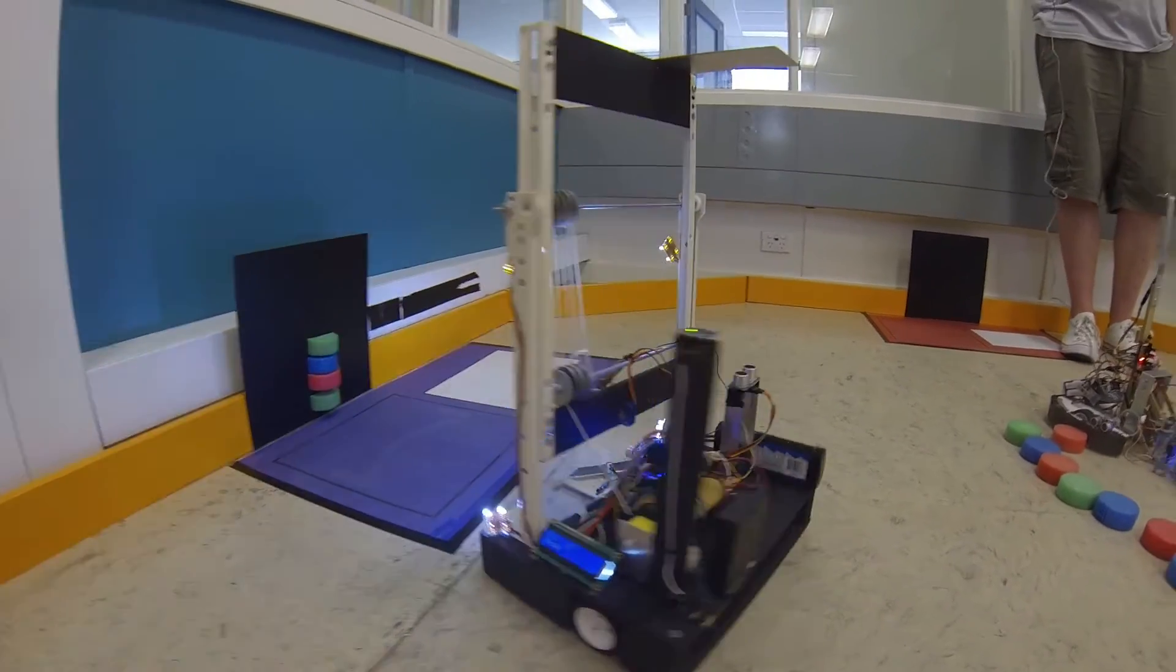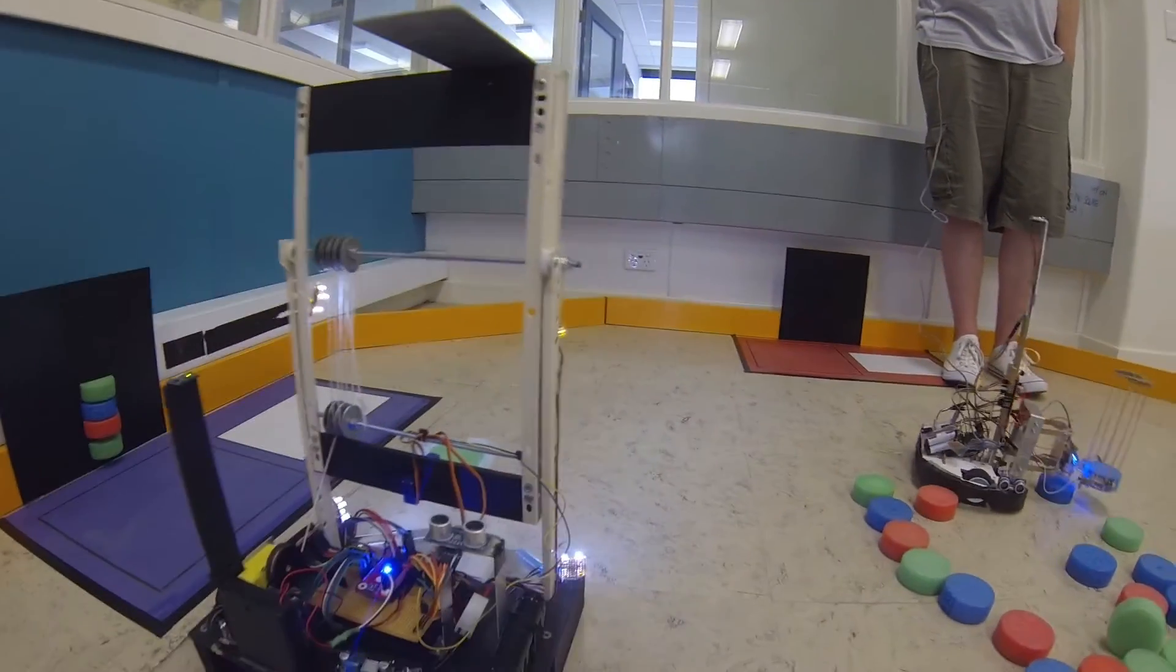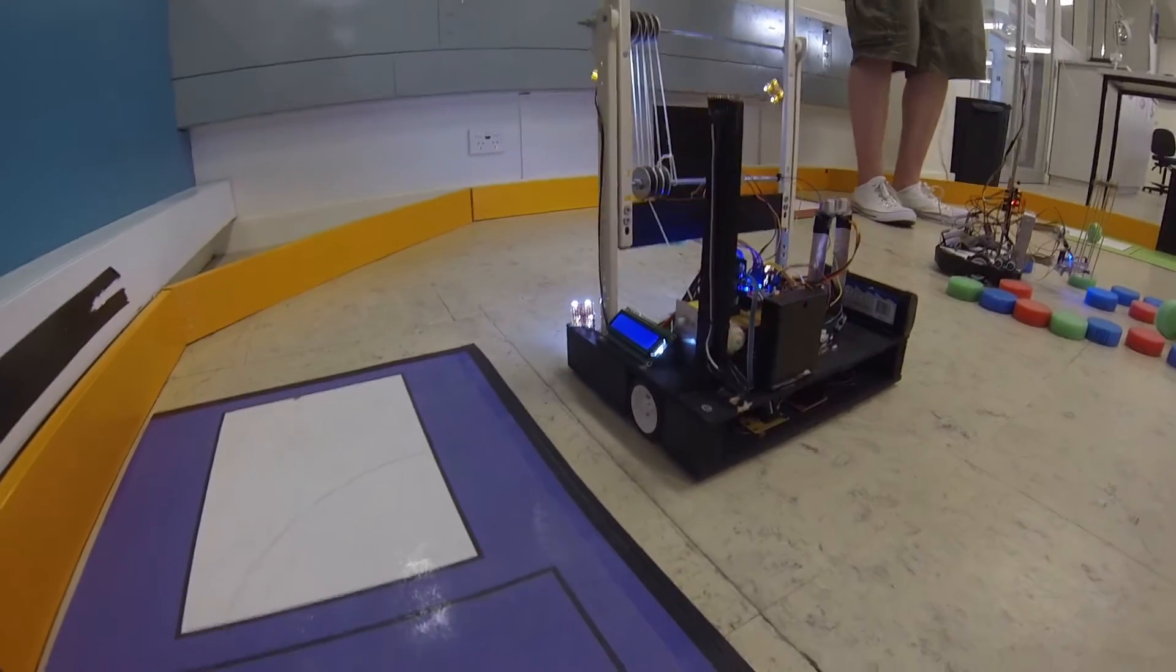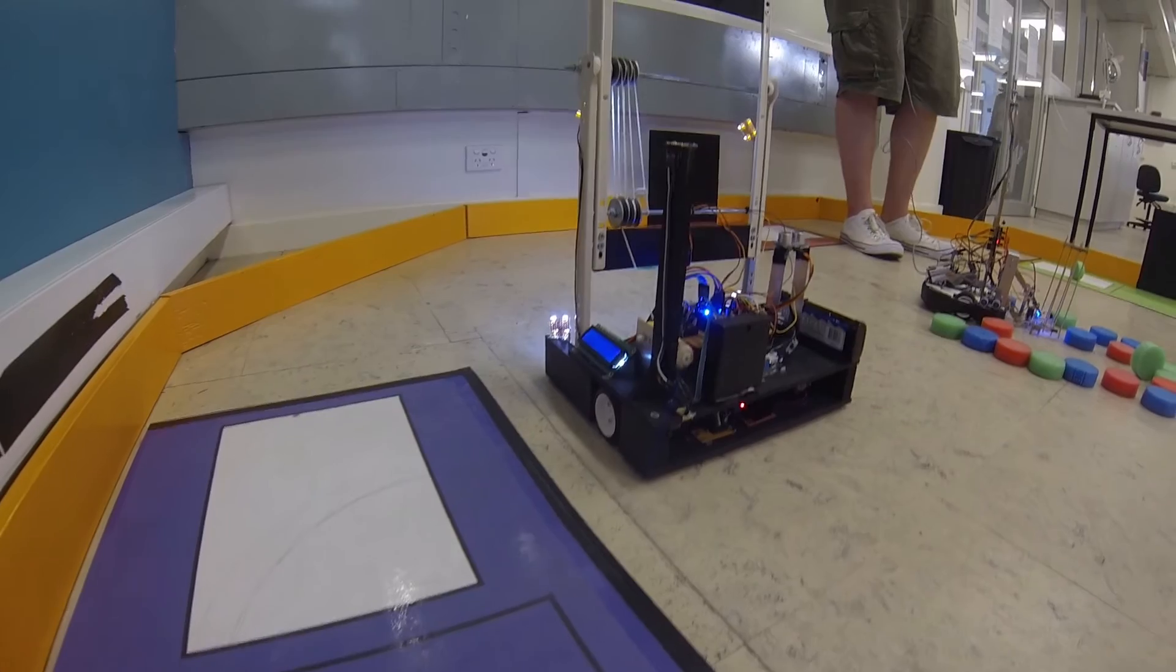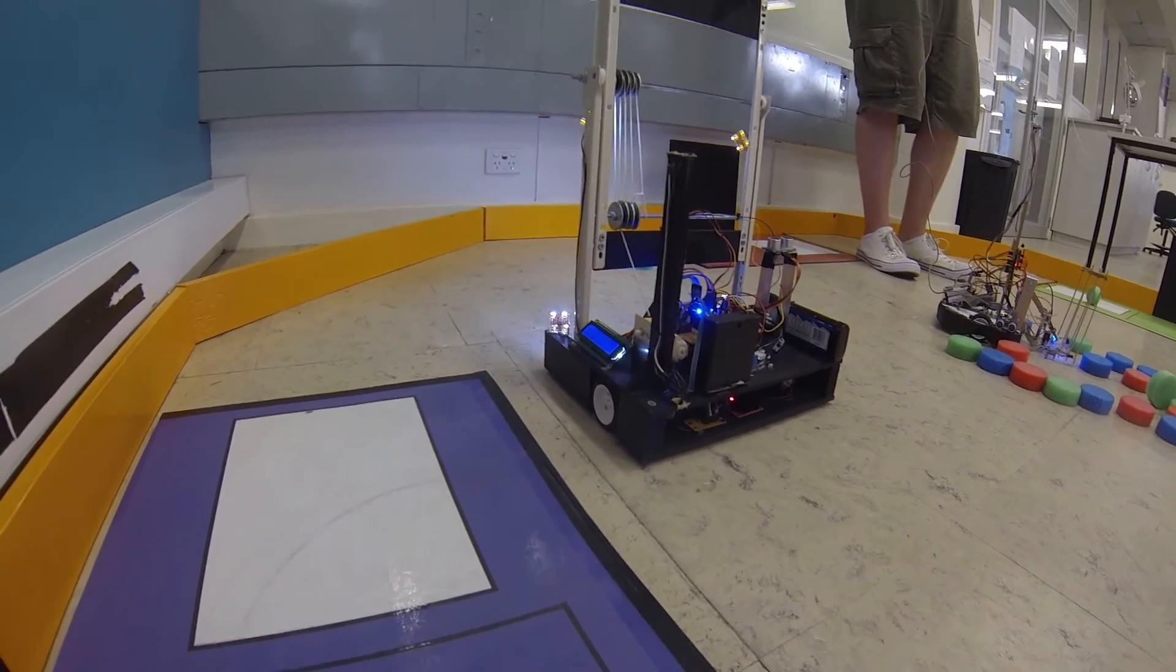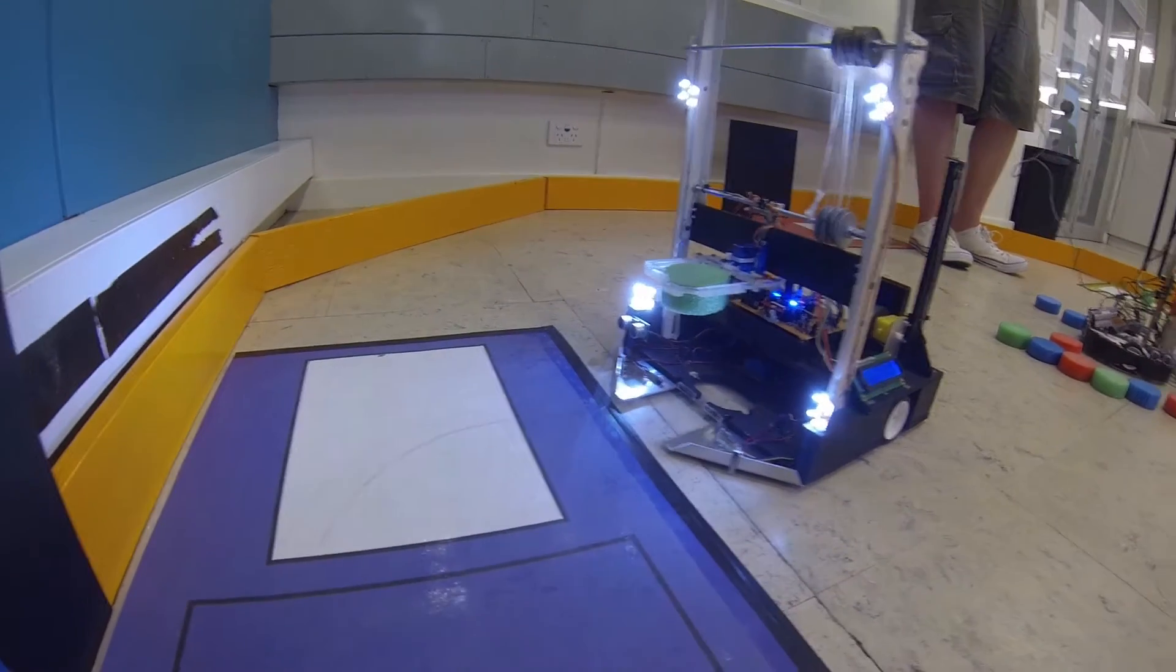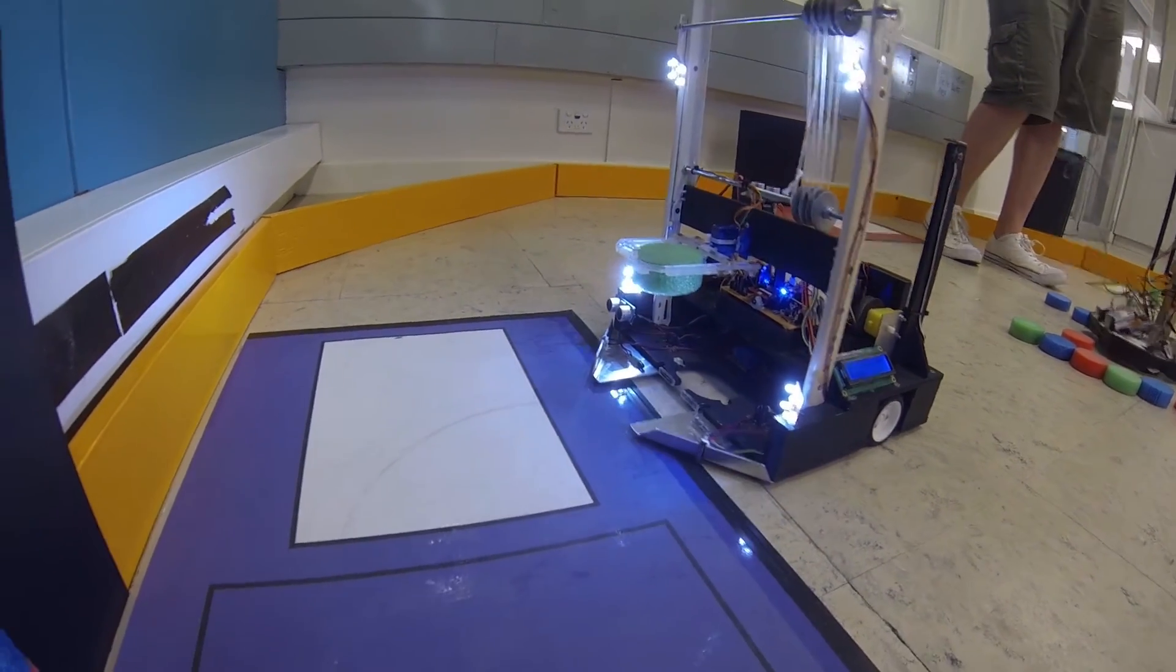The magnetometer by itself didn't provide accurate values due to all the metal in the walls and the floor of the arena so we needed to calibrate that. We did that by taking many points and centering all the data around a central point, and that gave us accurate turns to within a few degrees.